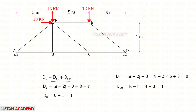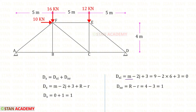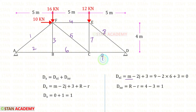To find DSI, that is internal static indeterminacy, this is the formula. Here, M is the number of members. Let us count the members: 1, 2, 3, 4, 5, 6, 7, 8, 9. So M is 9.